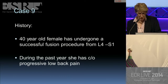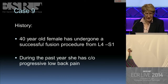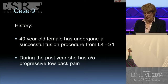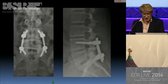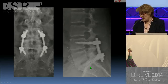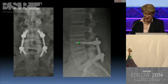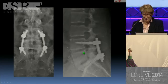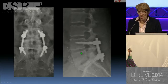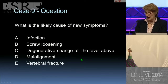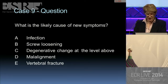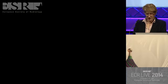Case number nine: a 40-year-old female who had a successful fusion procedure from L4 to S1 but has been complaining of progressive low back pain over the past year. The plain radiographs show previous pedicle screw fixation, an interbody fusion likely from an anterior approach, and bone graft. The question: infection, screw loosening, degenerative change at the level above, malalignment, or vertebral fracture?